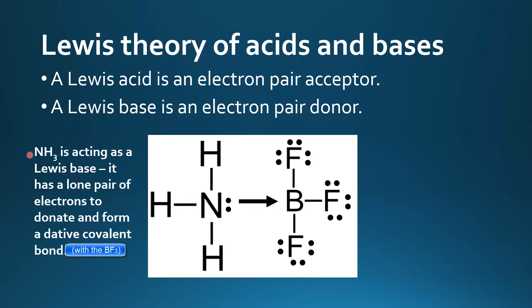So in this example NH3 ammonia is acting as a Lewis base. It has a lone pair of electrons to donate and forms a dative covalent bond. BF3 is acting as a Lewis acid, it has an incomplete octet to accept the electron pair from the ammonia. And this arrow represents the dative covalent bond which shows that both the electrons for this bond are coming from the ammonia.